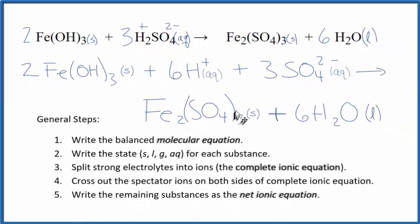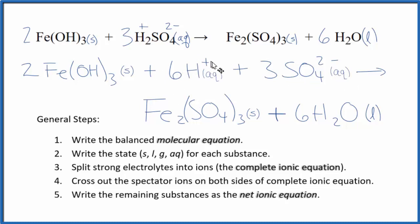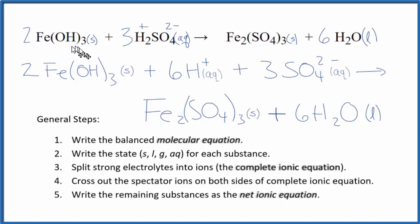This is a bit of a tricky net ionic equation. You need to realize that the iron three hydroxide is a solid and also that iron three sulfate is a solid as well, so we end up with the net ionic equation and the complete ionic equation being the same. If you look at charge, we have 6 positive charges here, and then 3 times the 2 negative charge gives minus 6. So the 6 plus and 6 minus cancel out, and all of the products are neutral. If you counted the atoms, each type of atom would also be the same on both sides, so mass would be conserved as well. This is Dr. B with the balanced net ionic equation for Fe(OH)₃ plus H₂SO₄. Thanks for watching.